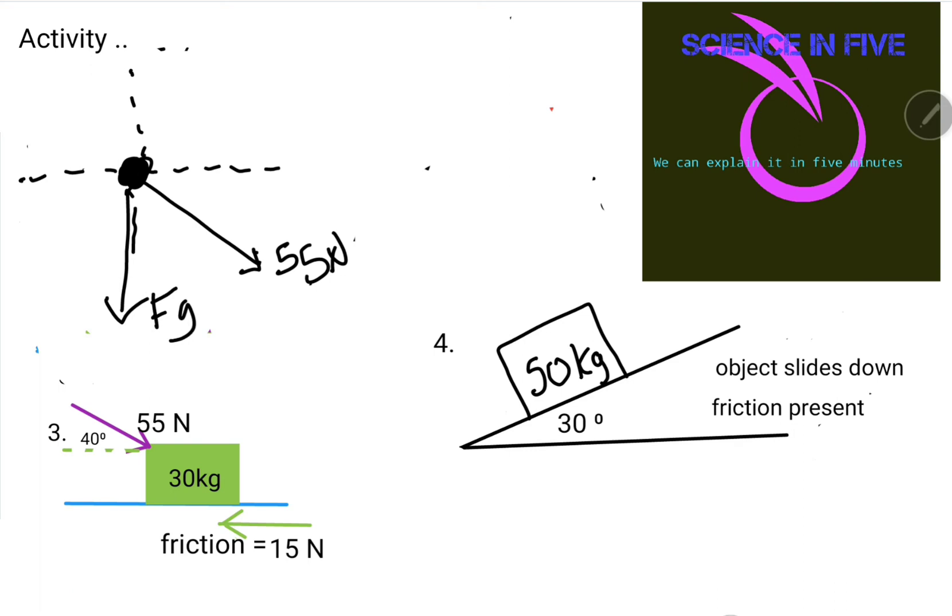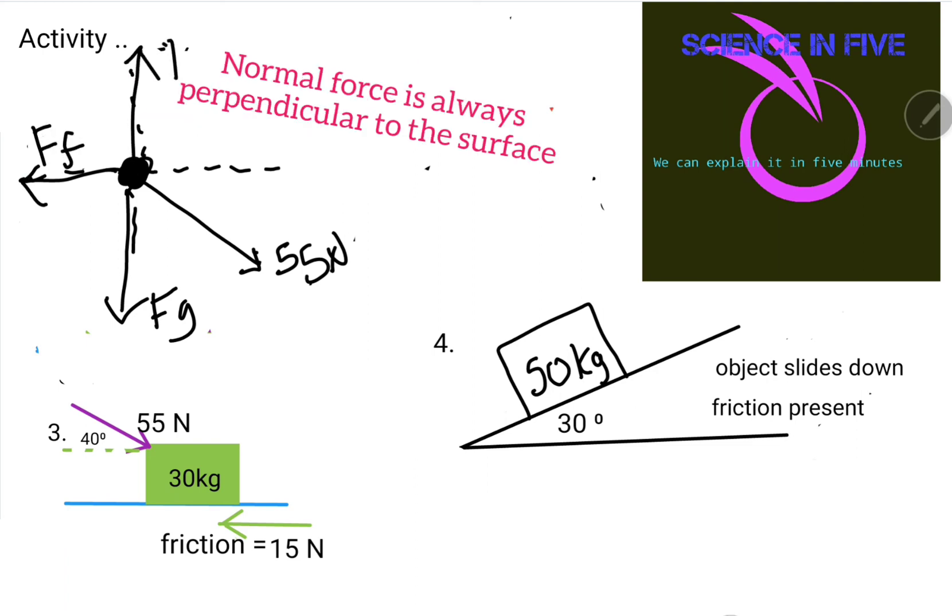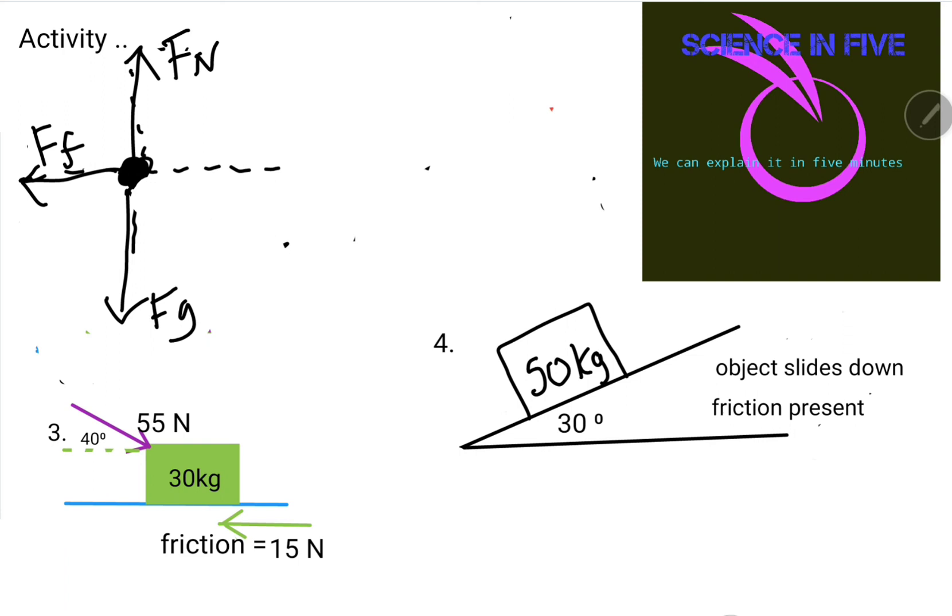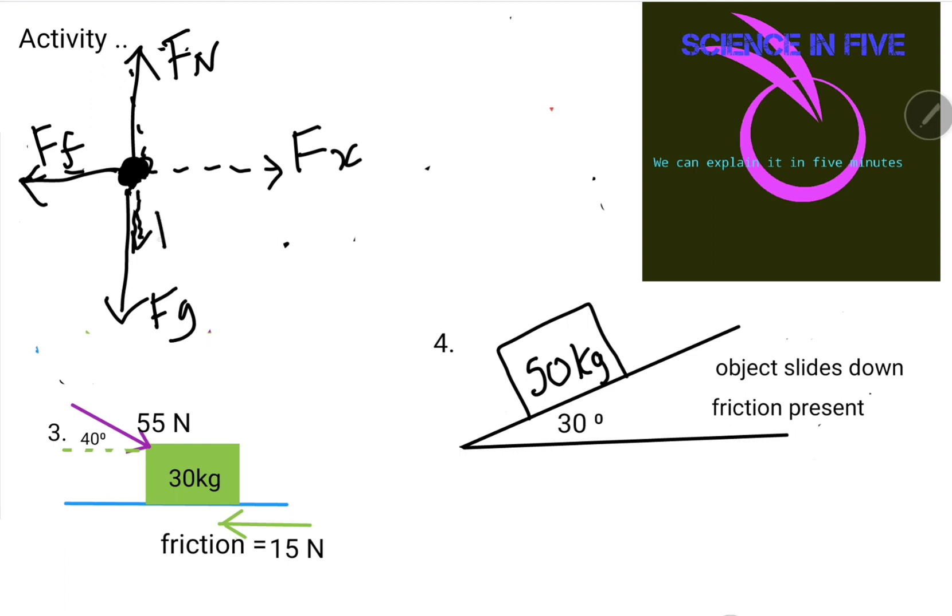And then we're told there's a frictional force going in that direction, and then there'll be a normal force going up. But we have an option: we can remove this 55 newton force and replace it with its components. So the components will be horizontal component and vertical component.